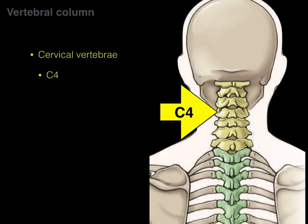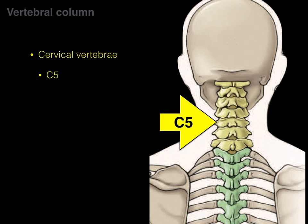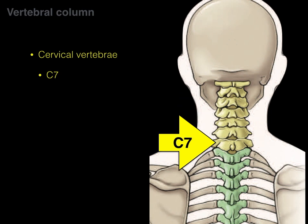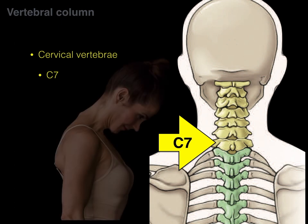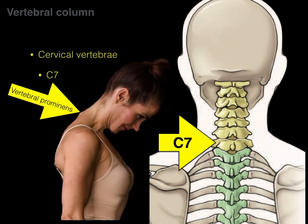Next is C3, followed by C4, C5, C6, and finally C7. C7 has a very prominent spinous process that projects at the back, and because it's so prominent, it's called the vertebral prominence. In surface anatomy, if you flex your neck and touch your chin to your chest and put your hand on the back, that most prominent bony projection is the vertebral prominence.